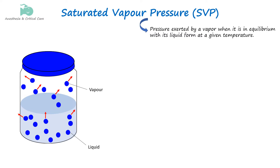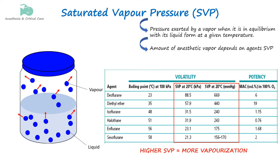The pressure at this point is called saturated vapor pressure (SVP). SVP is important because it tells us how easily a substance can turn into vapor at a specific temperature. Each anesthetic agent has a unique SVP, so vaporizers need to accurately control the amount of vapor released based on the SVP of the agent at room temperature.